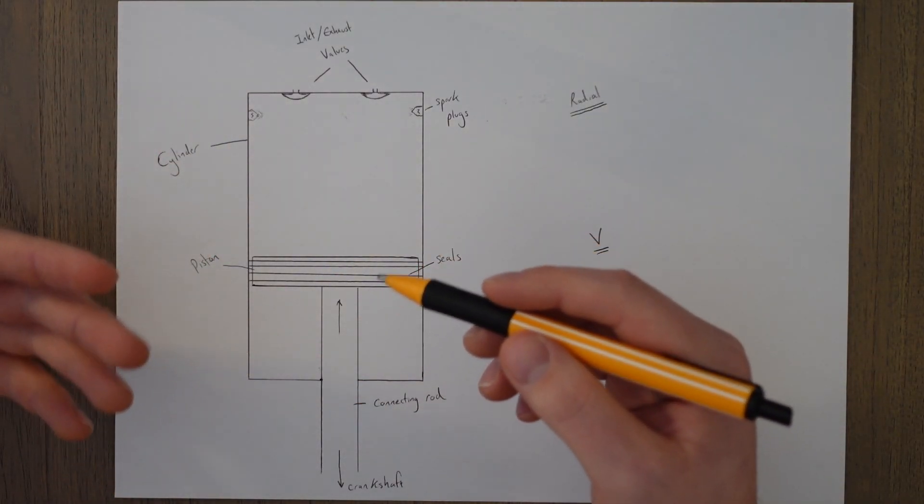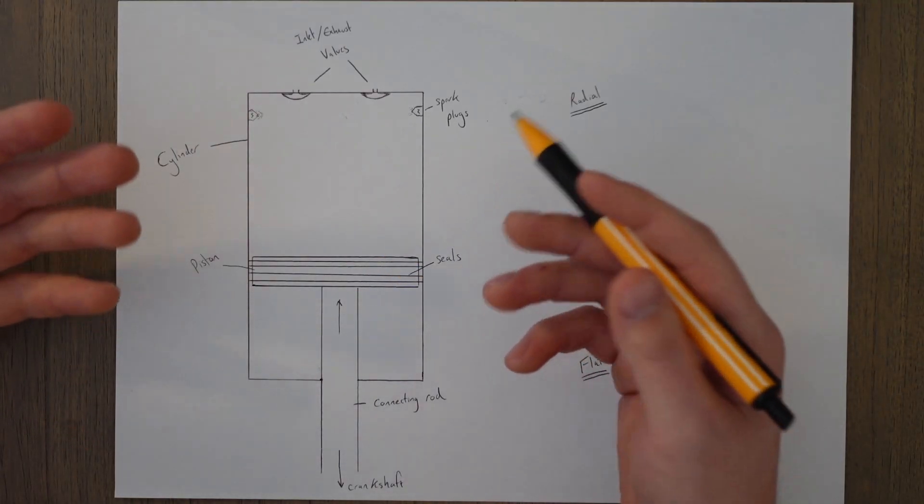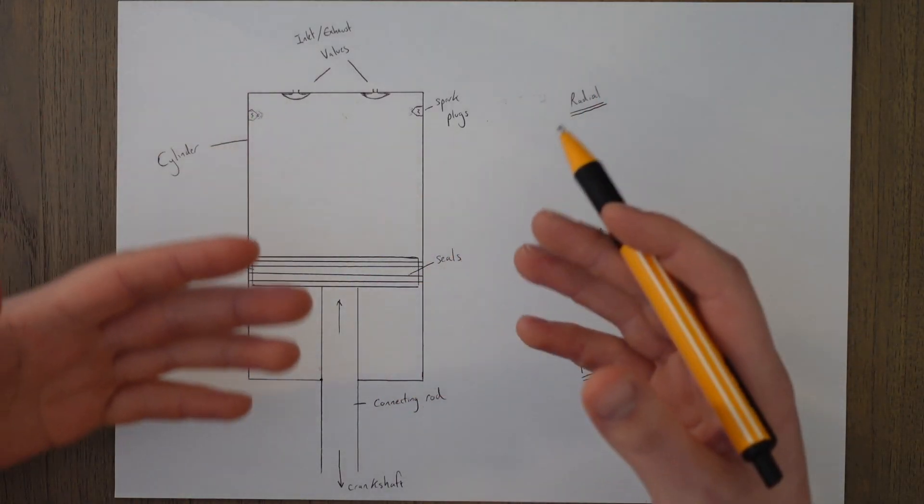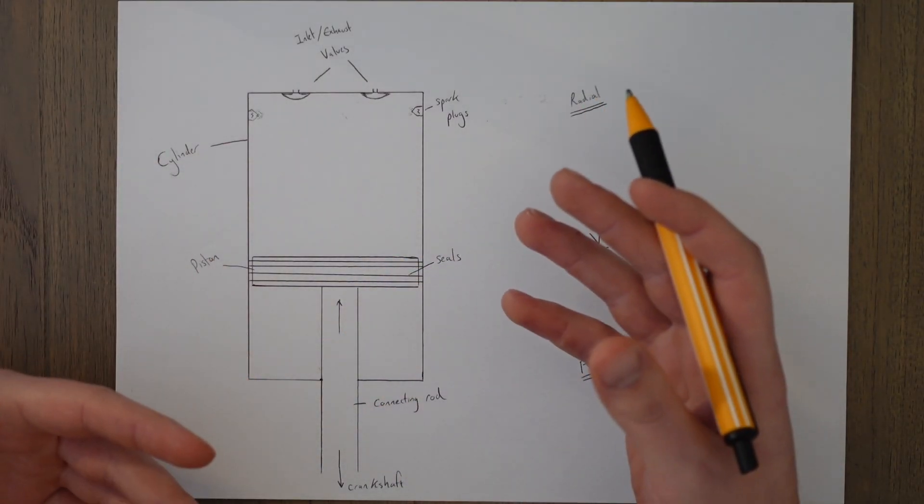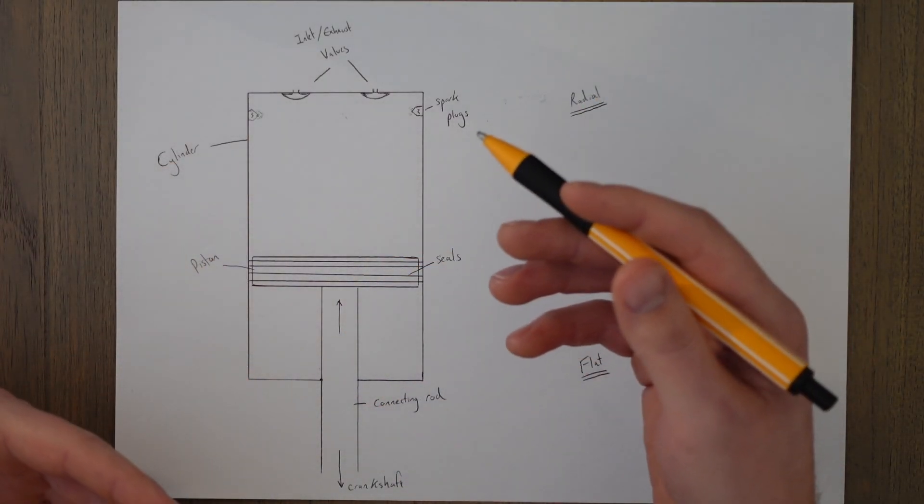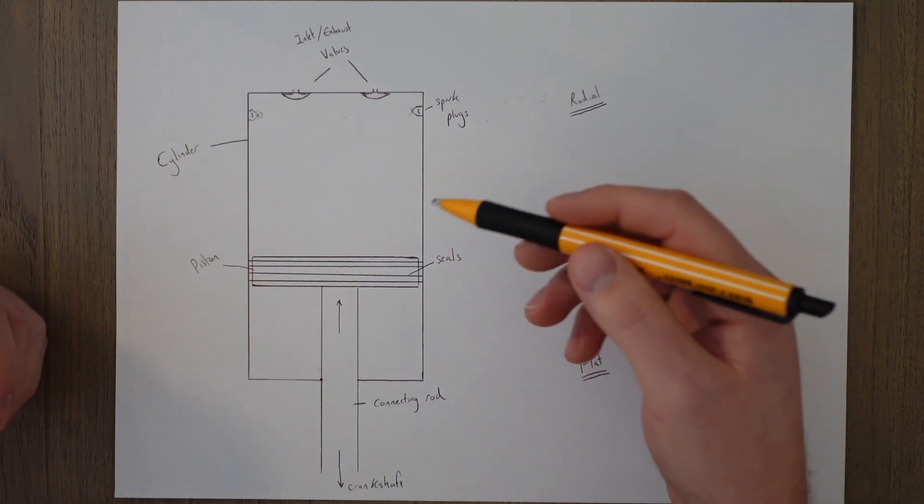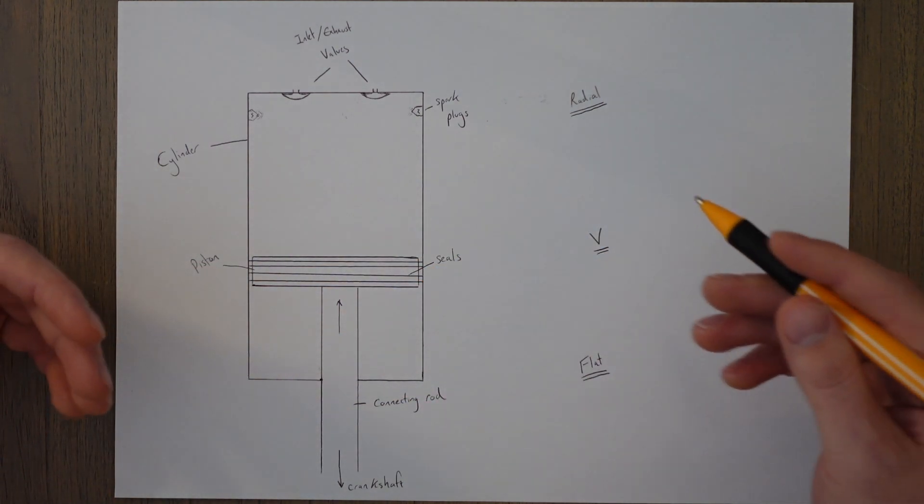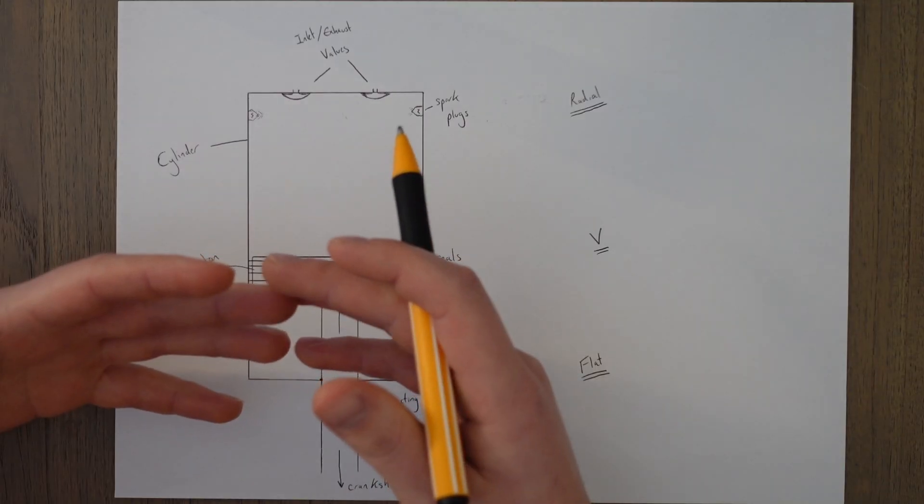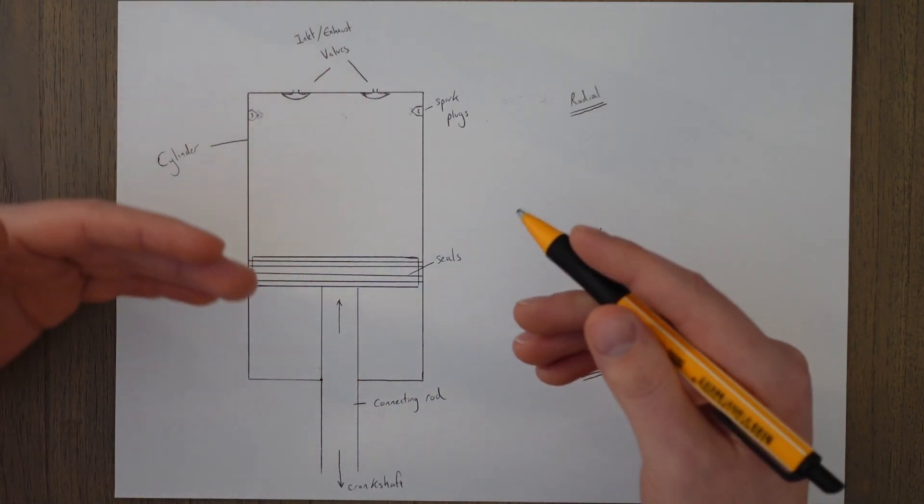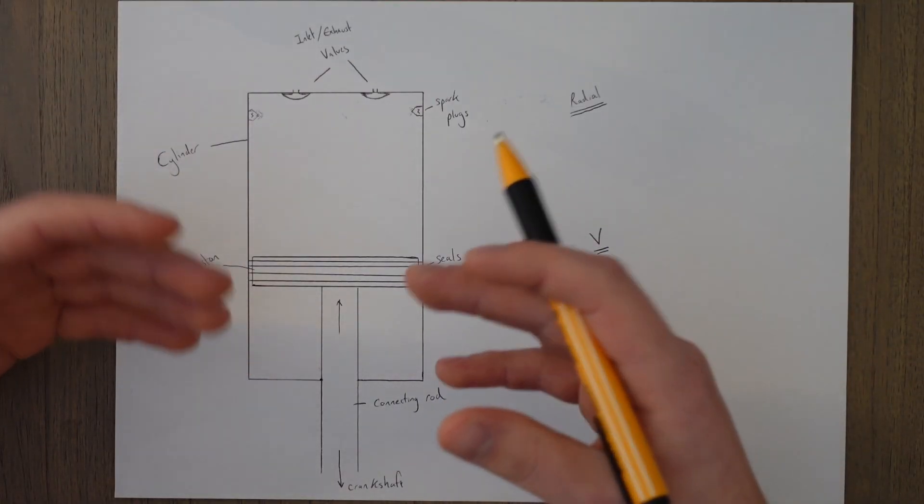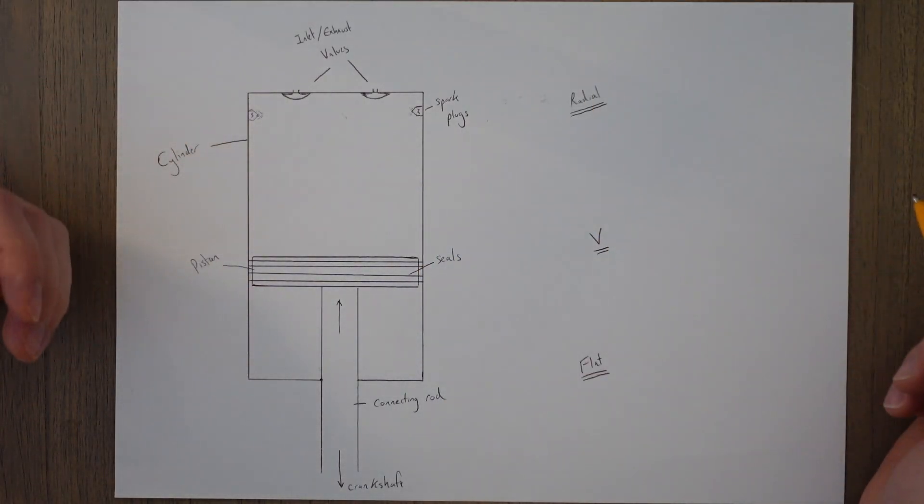In a normal four-stroke engine, the actual driving force is only created 25% of the time. It's only during that combustion phase of the cycle, which means that only one of the pistons actually drives the crankshaft at any time. If we add more cylinders, if we add eight cylinders for example, we could figure out the timings of the cycle so that we always have at least two pistons driving the crankshaft and therefore more power would be produced.